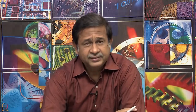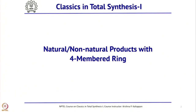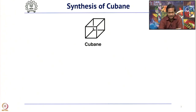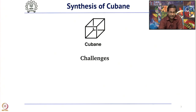Now we will move to 4-membered rings. When we talk about 4-membered rings, there are quite a few natural products having a 4-membered ring. The first and foremost non-natural product that should come to mind is Cubane. Cubane is a very interesting compound — there are 6 four-membered rings fused together. Making even one 4-membered ring is difficult because of ring strain, so the challenge for synthetic chemists to make Cubane is very very high.